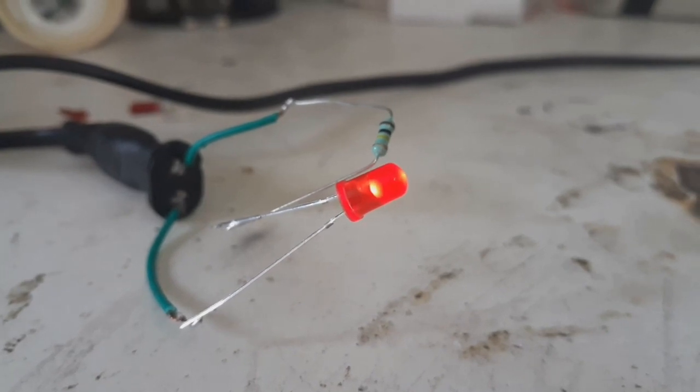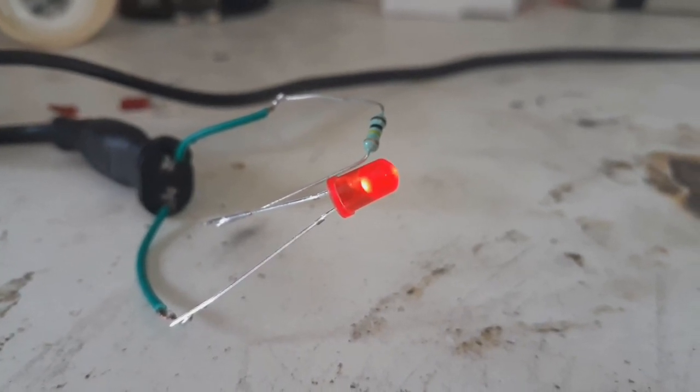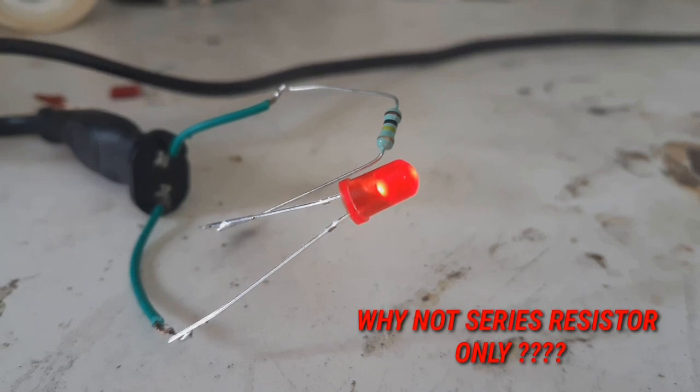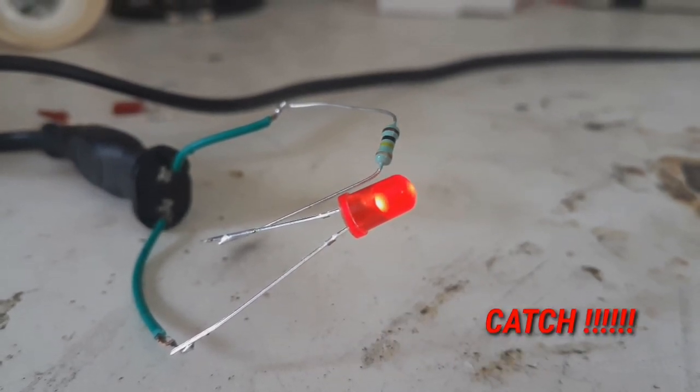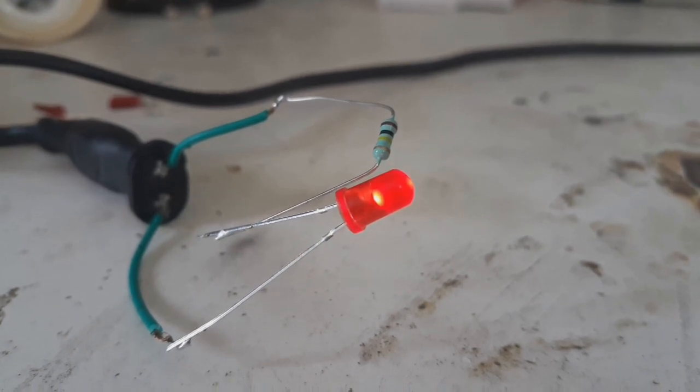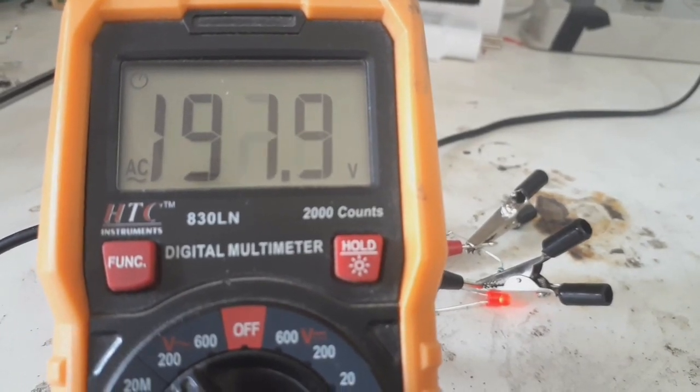So why don't modern LED light bulbs use a simple series resistor instead of a bit more complex circuitry? So there's the catch: the series resistor wastes a lot of power than an LED itself consumes.